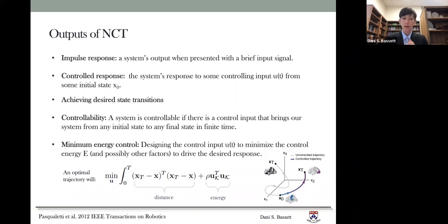Now I want to talk about the minimal energy control. And here is where we would design a control input U of T that would minimize the control energy and possibly some other factors to drive a desired response. So we're not asking, can you do anything to drive this desired response, but can you define a control input that minimizes the energy required for that transition? And the reason that that's interesting is that energy minimization is a common biological constraint. So something that the brain may be using anyway, very frequently in deciding the state transitions that it engages in.